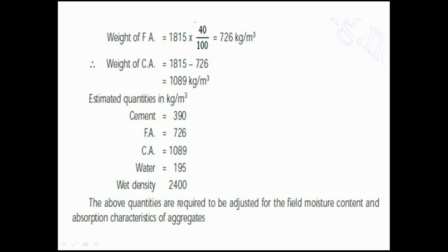Weight of fine aggregate = 1815 × 40/100 = 726 kg/m³. Weight of coarse aggregate = total aggregates minus fine aggregates = 1815 − 726 = 1089 kg/m³. Now estimating the quantities: cement is 390 kg/m³, fine aggregates 726 kg/m³, coarse aggregates 1089 kg/m³, water is 195 kg/m³, and weight density was calculated as 2400 kg/m³. The above quantities are required to be adjusted for the field moisture content and absorption characteristics of the aggregate. Thank you.